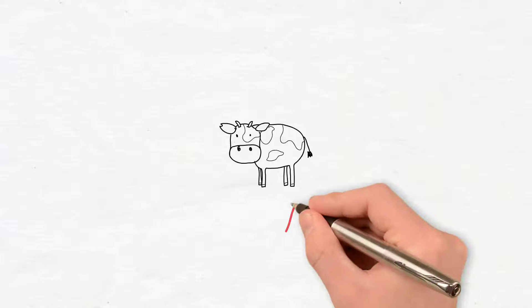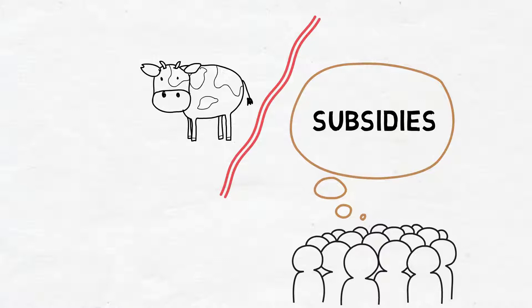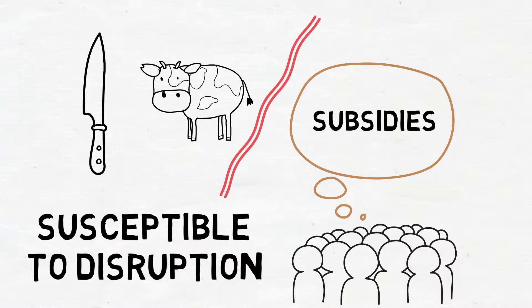So I mean, particularly the cow industry is on very thin margins. As I'm sure people are aware, there's a lot of subsidies going on. So it's kind of a very knife edge industry, and that makes it very susceptible to disruption.